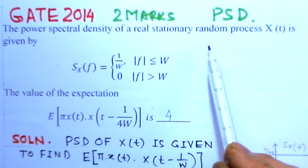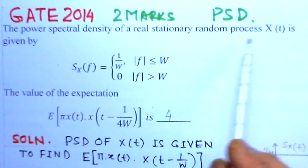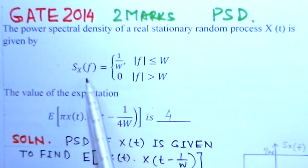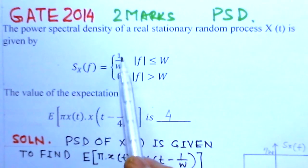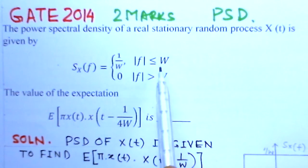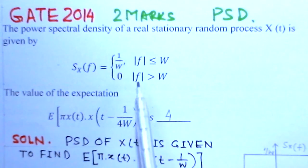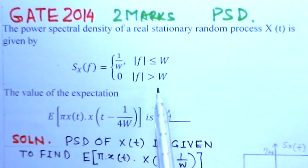The power spectral density of the real stationary random process X(t) is given by Sx(f) equals 1/W for |f| ≤ W and 0 for |f| > W. And we have to find the value of the expectation E[π X(t) X(t - 1/4W)].